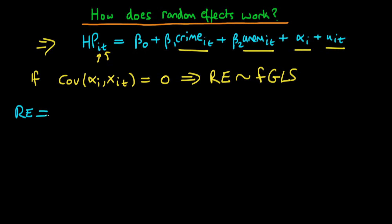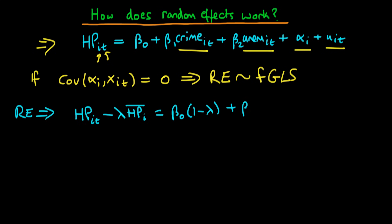What I'm going to do is write down the transformed equation for the random effects estimator. The random effects estimator takes the dependent variable — house price in city i at time t — and subtracts some amount lambda times the time mean of house price in that city. Doing the same to the right-hand side, we have beta_0 times (1 minus lambda), plus beta_1 times (crime rate_it minus lambda times the time mean of the crime rate in that city), plus beta_2 times the unemployment rate...